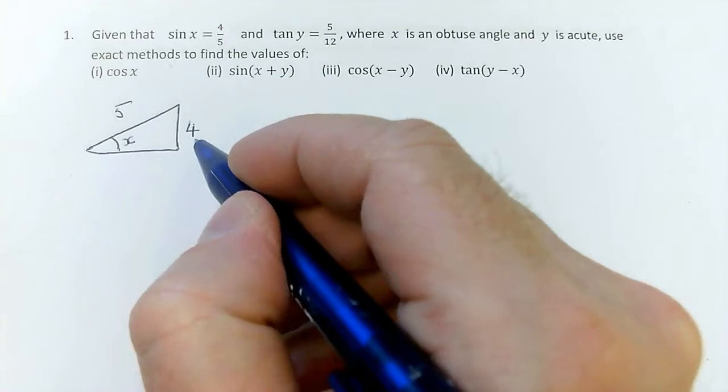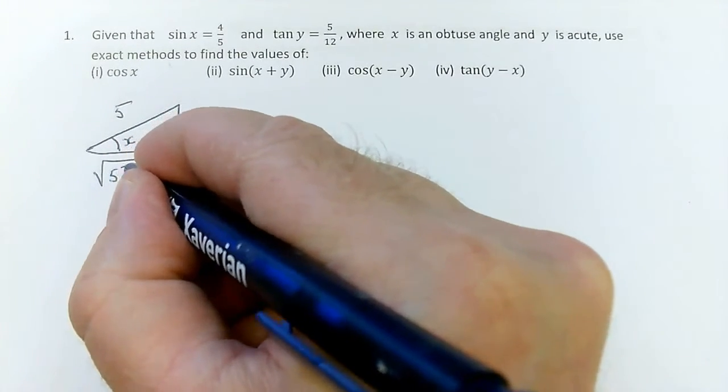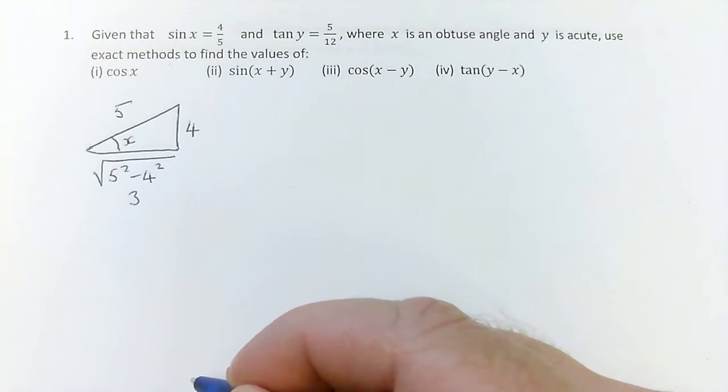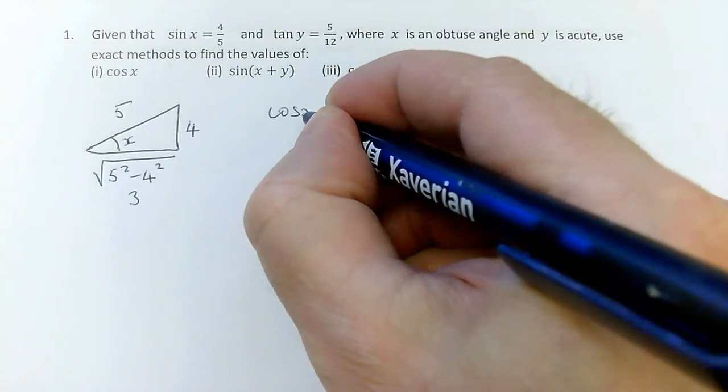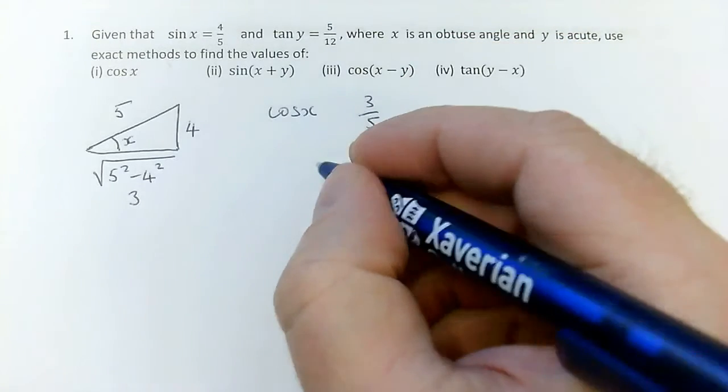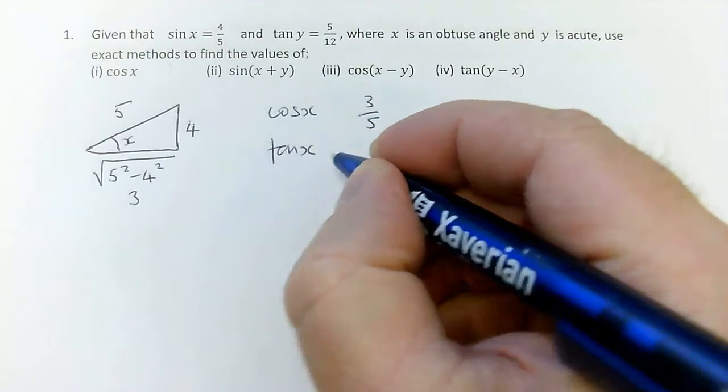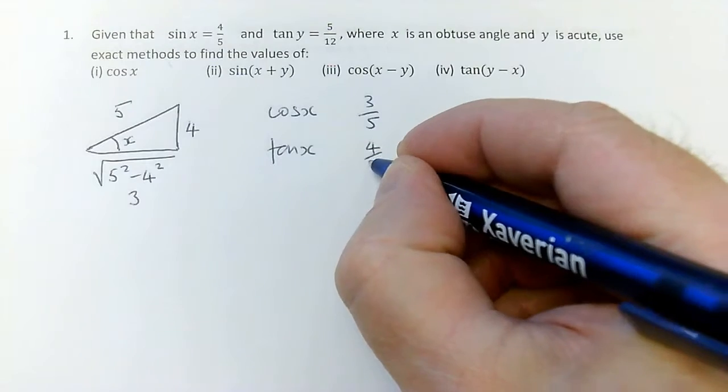So if that's a 4 and that's a 5, then I can use Pythagoras. This is going to be the square root of 5 squared minus 4 squared, which of course is 3 because it's a 3, 4, 5 triangle. So therefore, cos of x is going to be, well, it looks like it's going to be 3 fifths, and tan of x is going to be, looks like it's going to be opposite over adjacent 4 thirds.